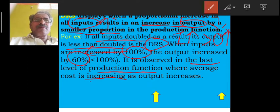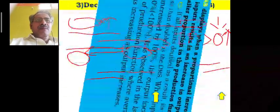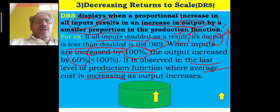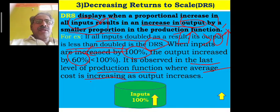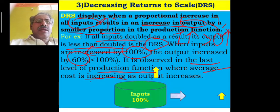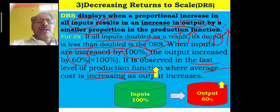We can understand this through a graphic. There is a box where input is 100%, with an arrow mark moving up. That leads to an increase in output as well, but output is smaller than the input. The arrow mark for output goes up only to an extent lesser than the height of the inputs.